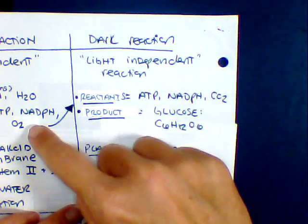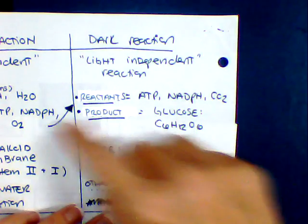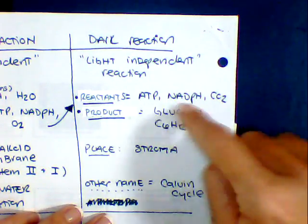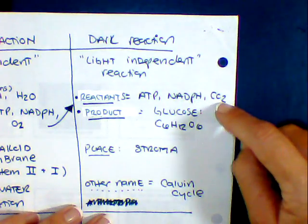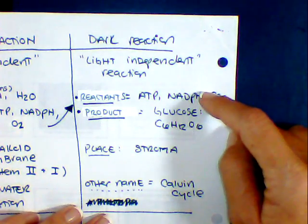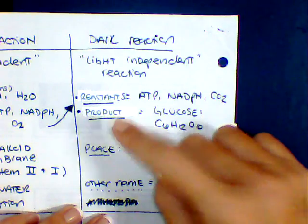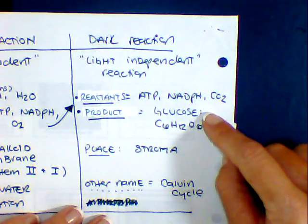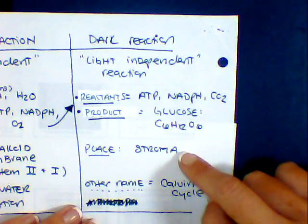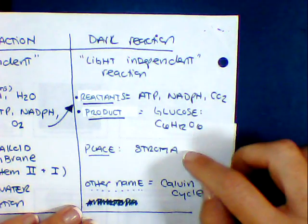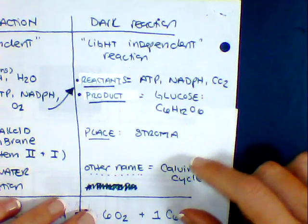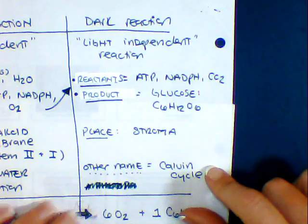So our reactants, which we just made over here, or sorry, our reactants become our products. And so we're going to take our energy as well as our CO2 that we're coming in from the atmosphere here. And our products, what we're walking out of the store with, is going to be your sugar. So one molecule glucose. This takes place again in the stroma, which is kind of the empty fluid region of a chloroplast. And another name for this cycle is actually known as a Calvin cycle.